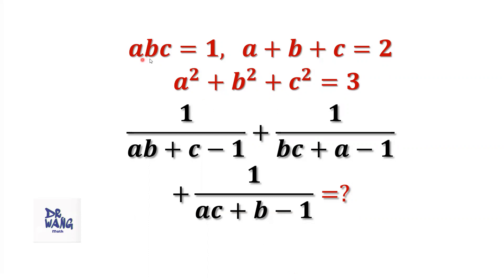If A, B, C equals 1, A plus B plus C equals 2, A squared plus B squared plus C squared equals 3. What is the value of 1 over AB plus C minus 1, plus 1 over BC plus A minus 1, plus 1 over AC plus B minus 1?